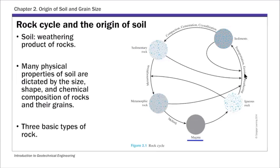First, let's talk a little bit about rock cycle and origin of soil. This is really the geology side of things. The reason we're interested in geology is because soils come from rock. Basically, soils are the weathering product of rocks, and many physical properties of soils and their physical composition are dictated by the size, shape, and chemical composition of rocks and their grains. That's why we want to briefly talk about different types of rocks.